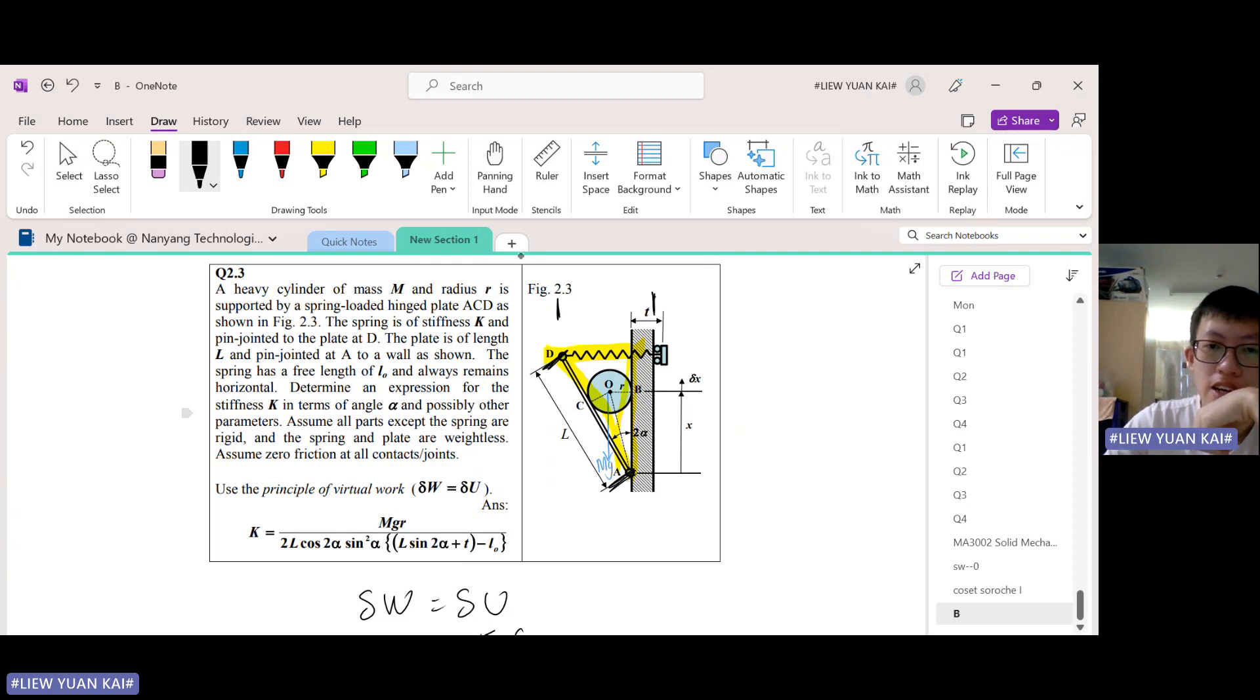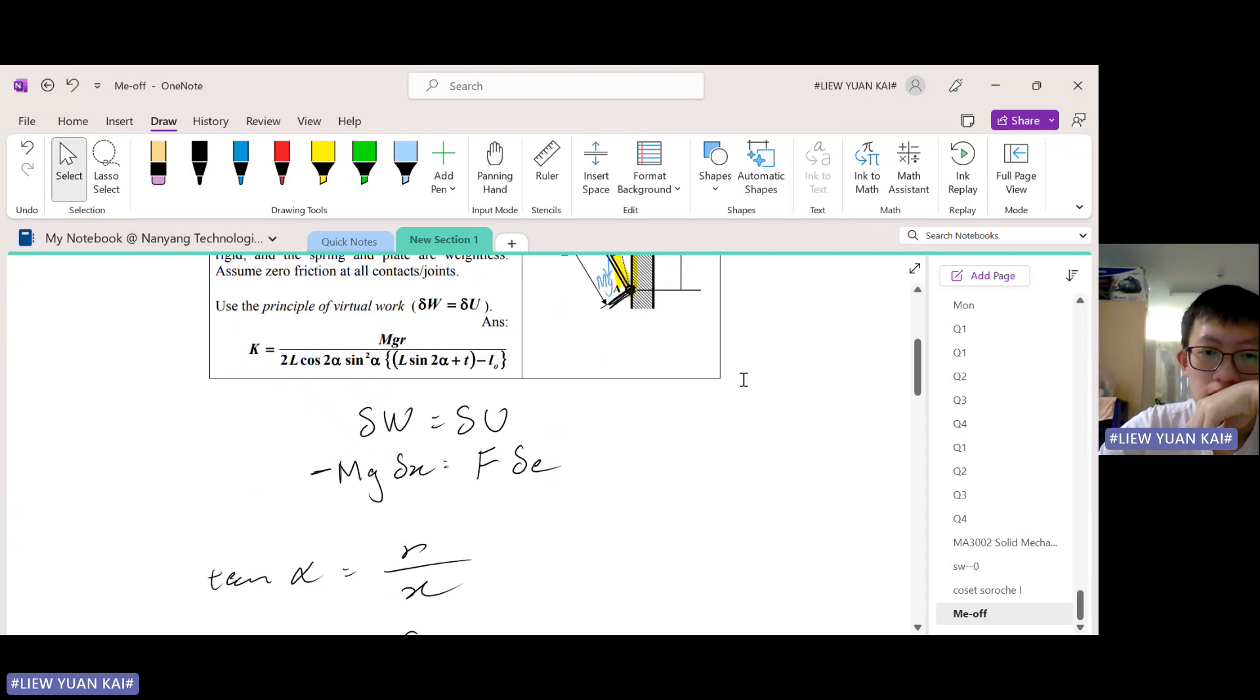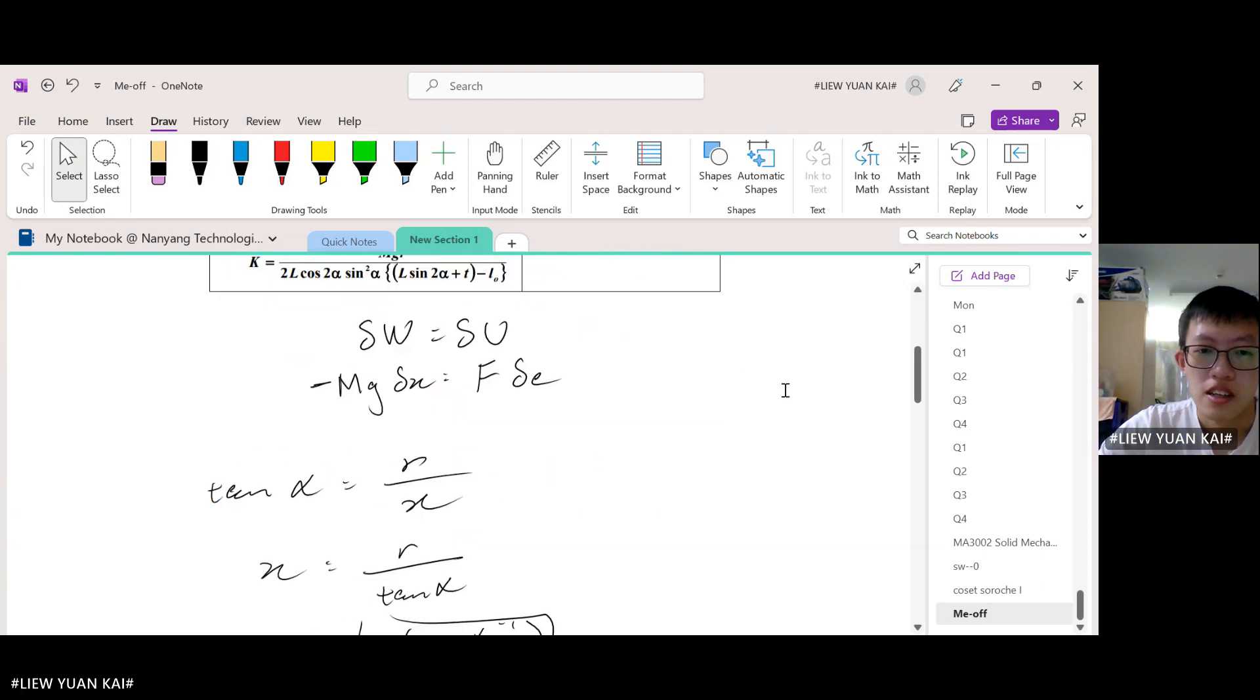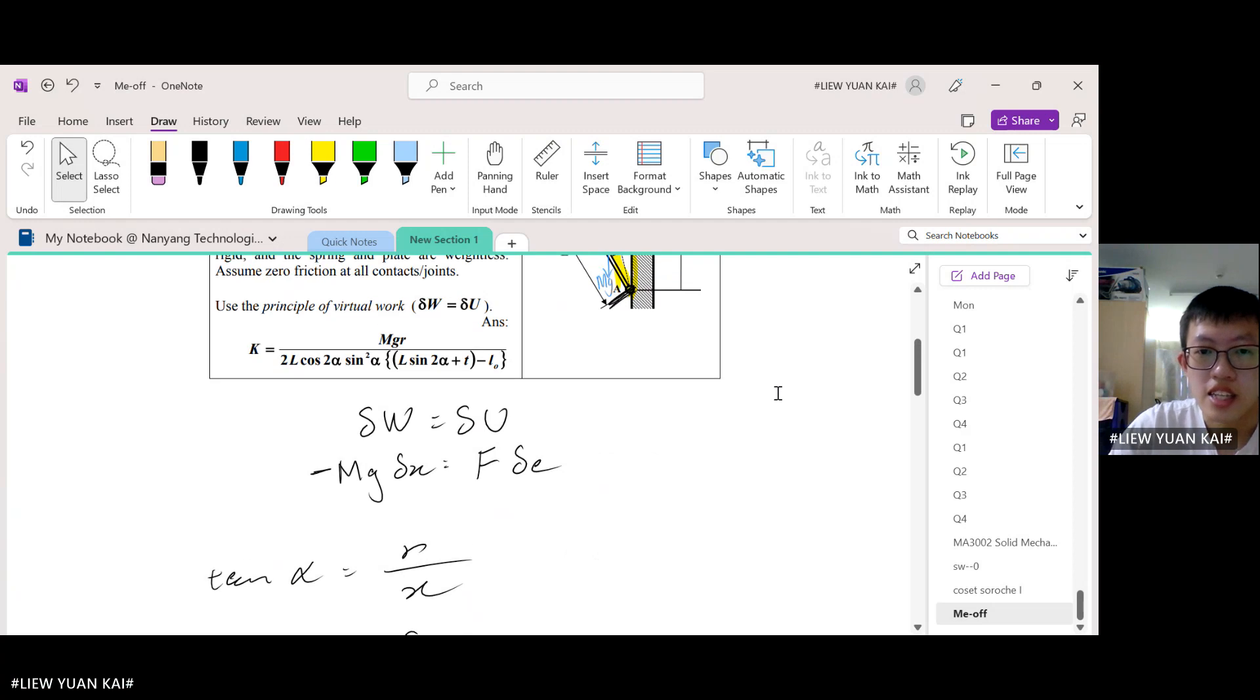So see, this diagram shows you the spring in the stretch configuration already. So this is L prime. And then this over here is T. The extension, because it's stretched, the extension is given by the new length minus the original length.